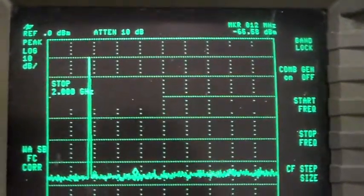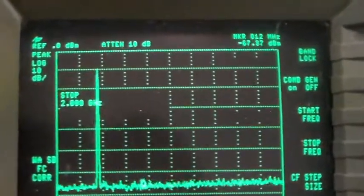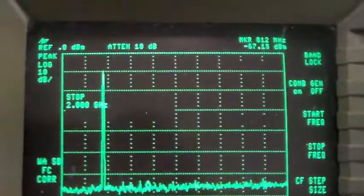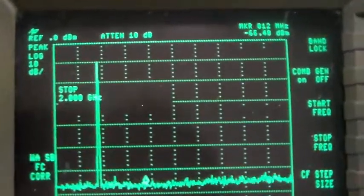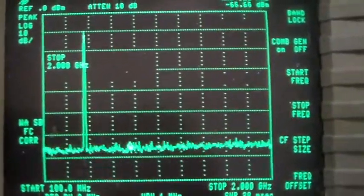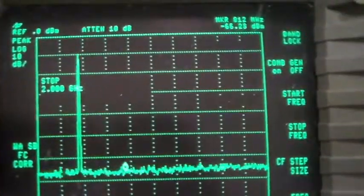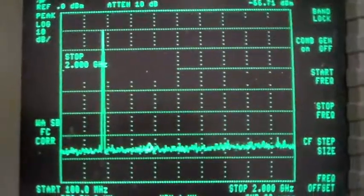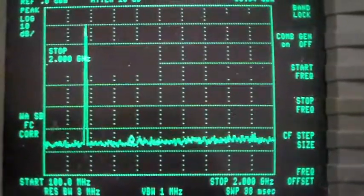It's all nice and clean as a whistle from that fundamental you can see sticking up there, all the way to the right hand side, which is our 2 gig point at the right hand side of the screen there. Nothing at all, clean as a whistle, so it looks like it's got one low pass filter that lets VHF and UHF through.